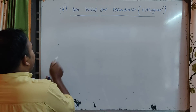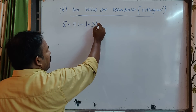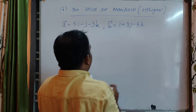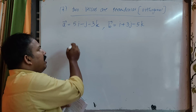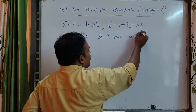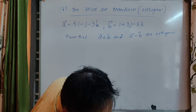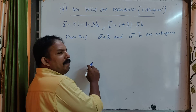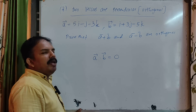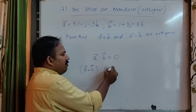If a is equal to 5i minus j minus 3k, and b equals 2i plus 3j minus 5k. The problem is: a and b are orthogonal. We have to do a dot b. A and b are perpendicular. We need to prove that a plus b and a minus b are perpendicular.